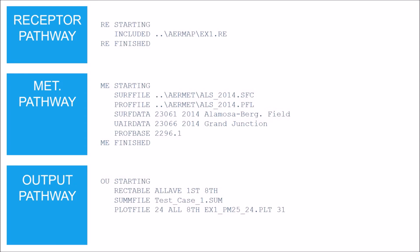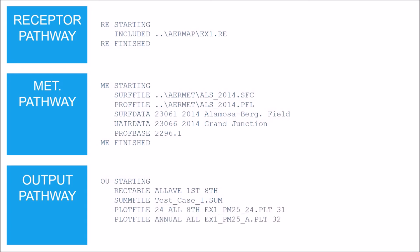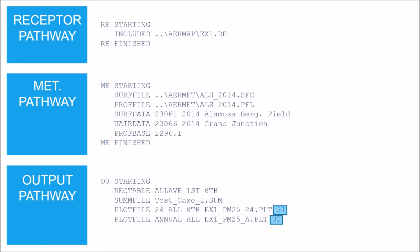The PLOTFILE keyword specifies a file easily read by plotting programs. For short-term averaging periods, list the averaging period, then the group ID, the high value, the file name, and the file unit. For annual averaging periods, list ANNUAL for the period, the group ID, the file name, and then the file unit. The file unit must be greater than 30; if you list different file names under each PLOTFILE keyword, the file unit for each entry must be different. The output pathway ends with the FINISHED keyword.